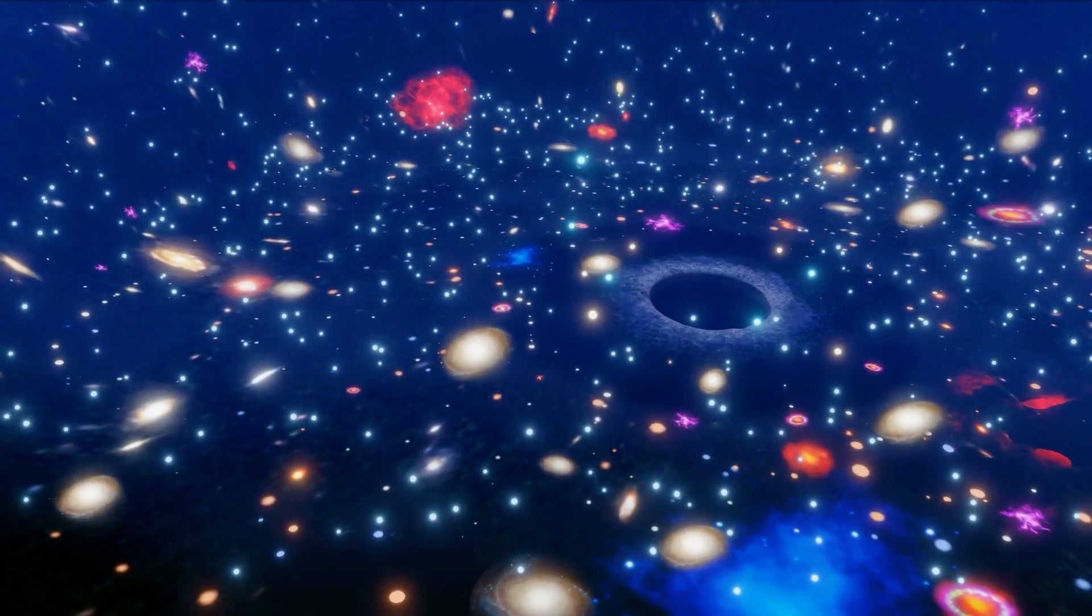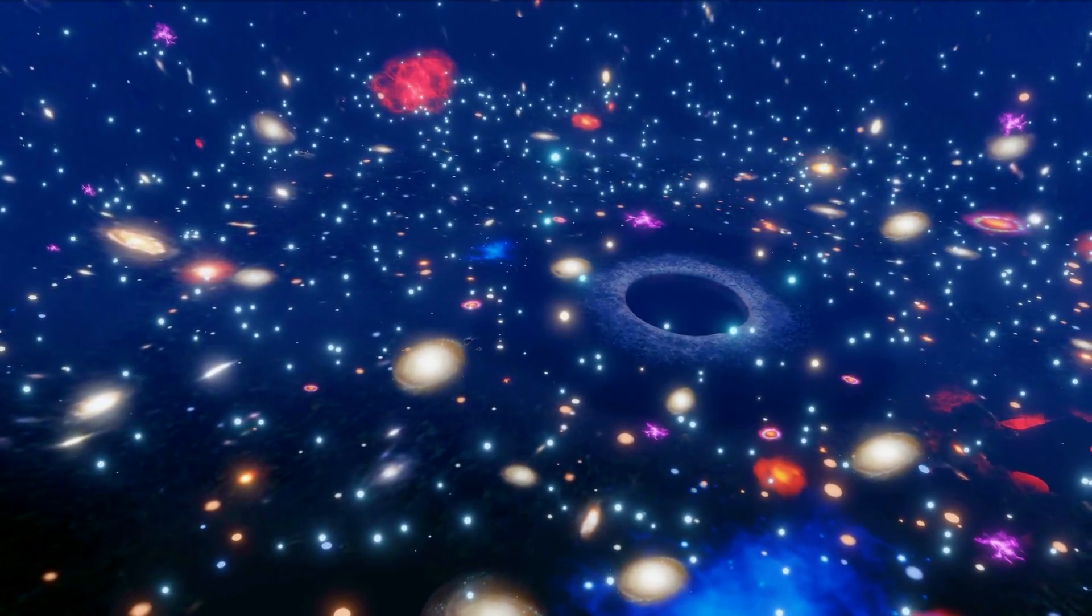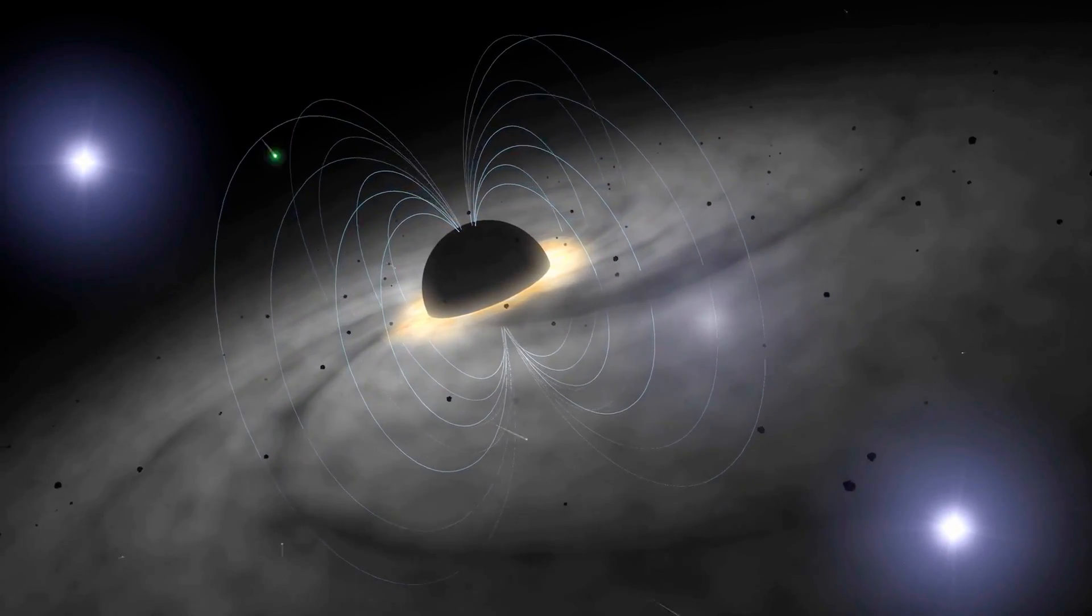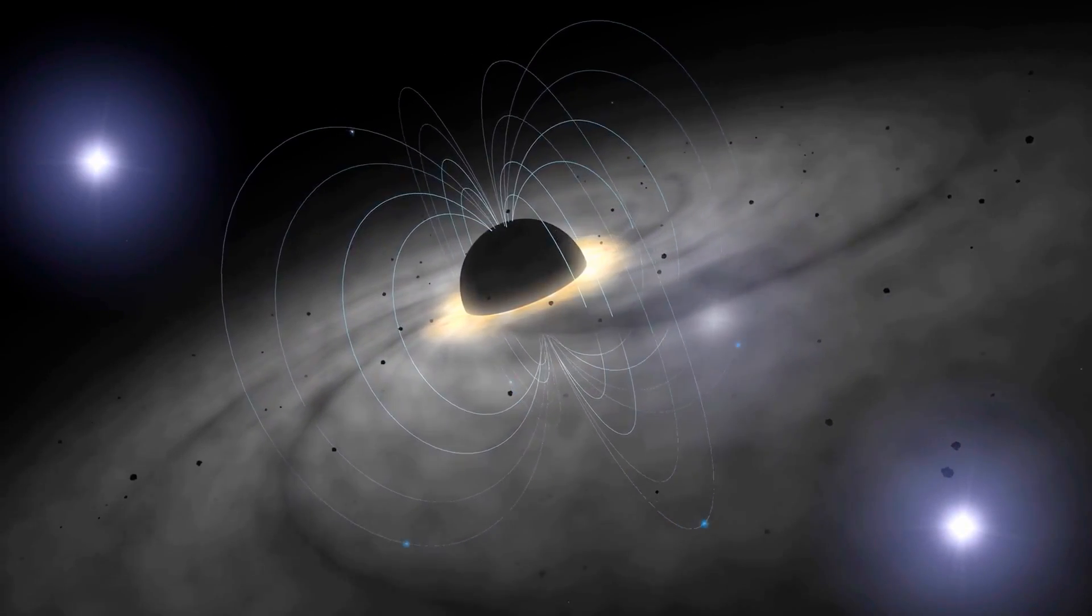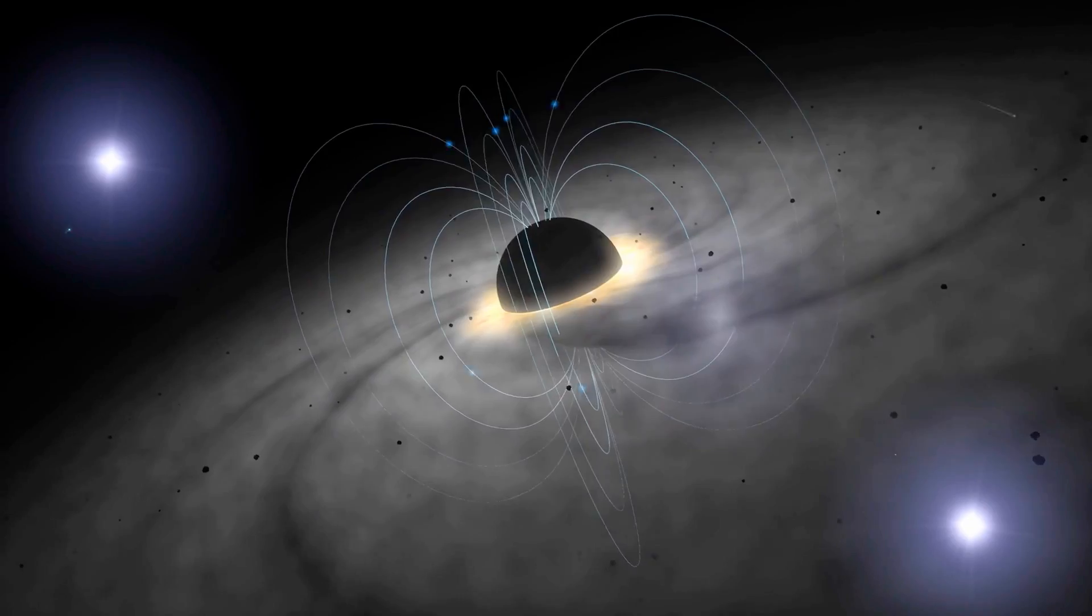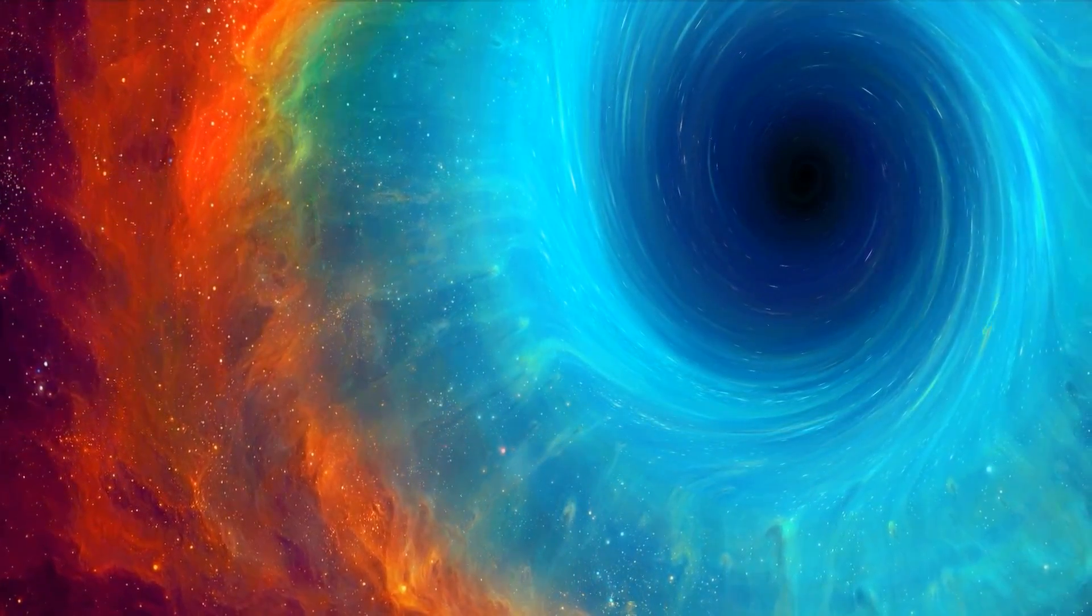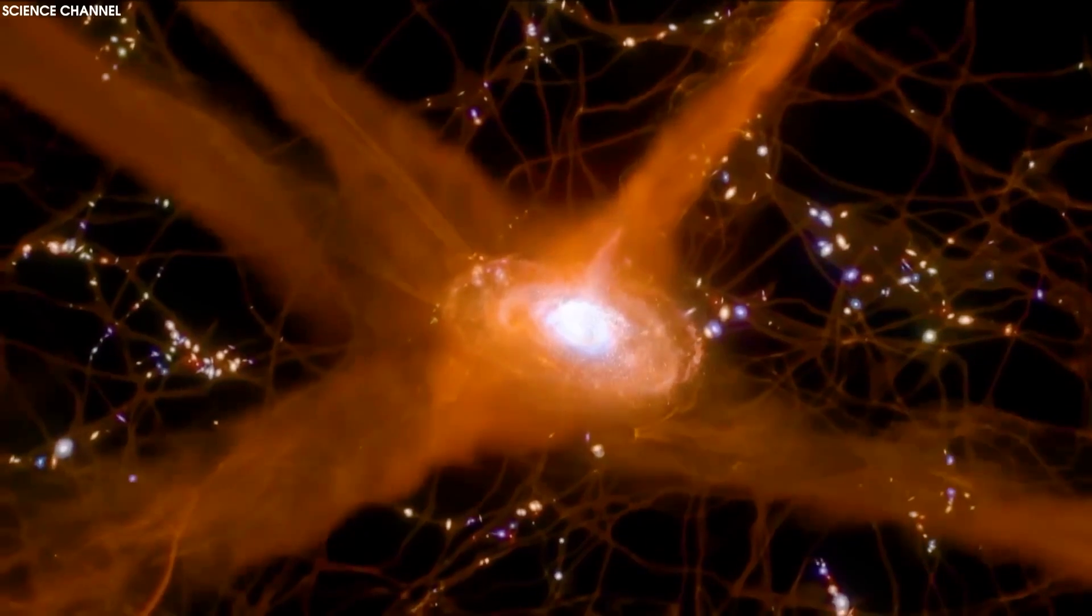For example, these supermassive black holes at the centers of galaxies produce magnetic fields that force matter back out into space because they feed on normal matter. The intergalactic material that these winds collide with influences the formation of new galaxies.